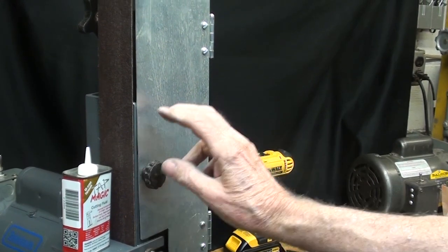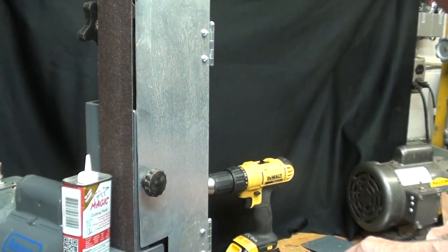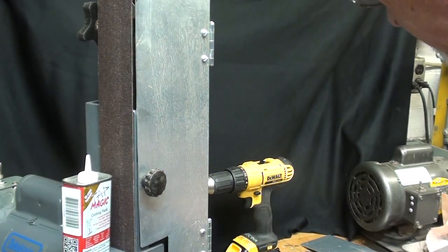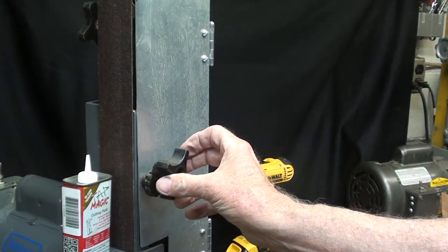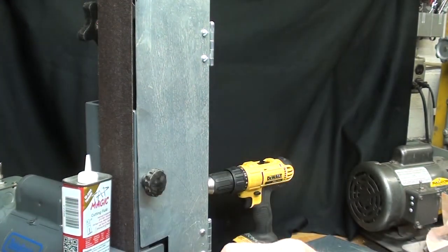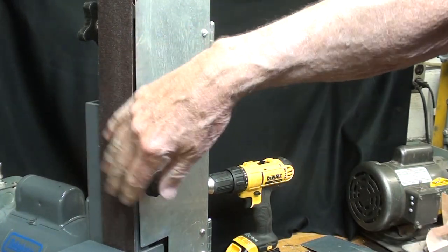You could also use a knob here that instead of having a thread coming out of it, is a, this is way too large of course, but the nut type. You don't want it so large it'll interfere with your workpiece when you're actually abrading something.